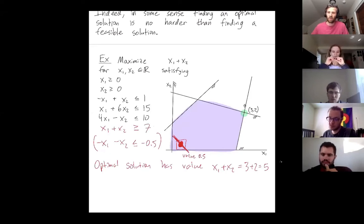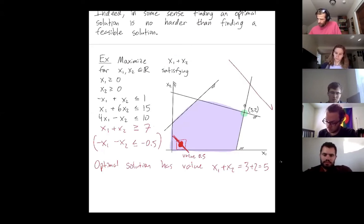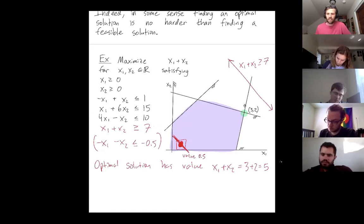You know, can I, not the optimal value, but can I obtain the value of 7? When I add this, right, I get this constraint x1 plus x2 is at most 7. And now my feasible solution set is empty.